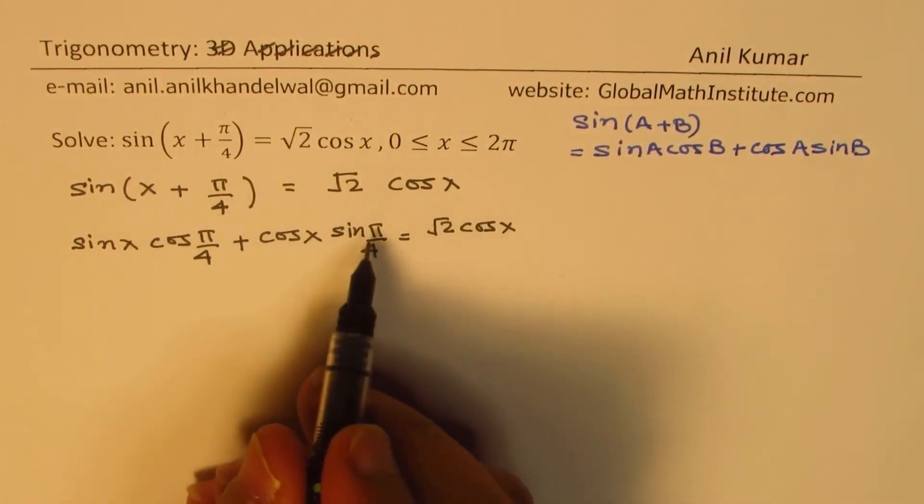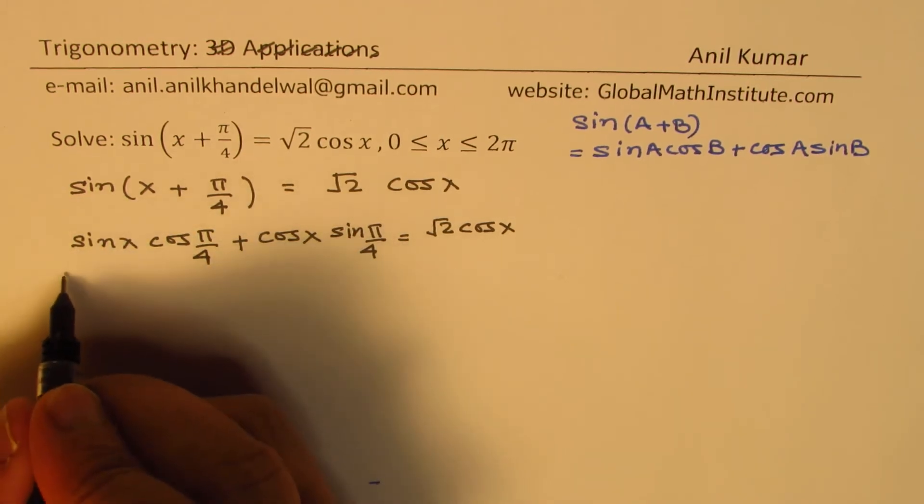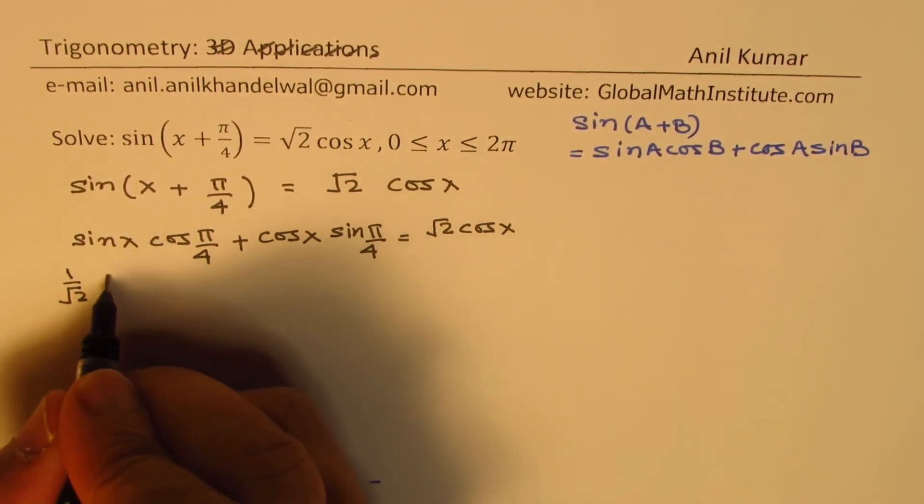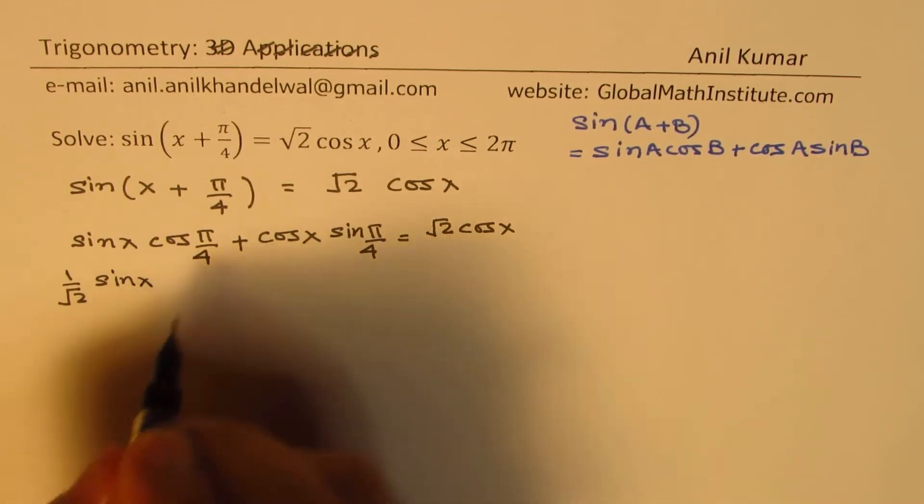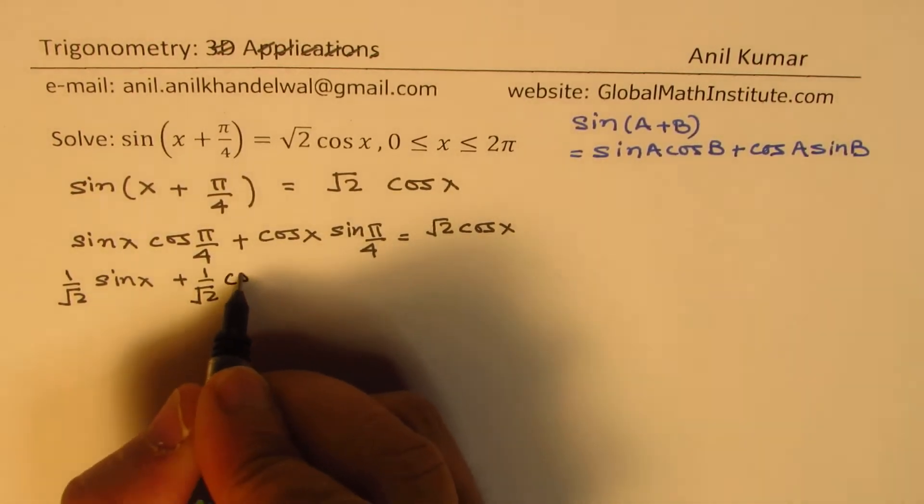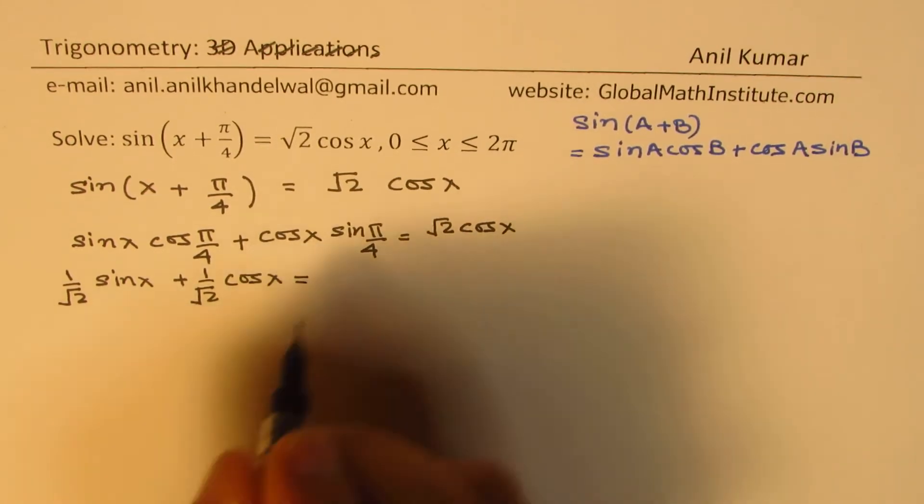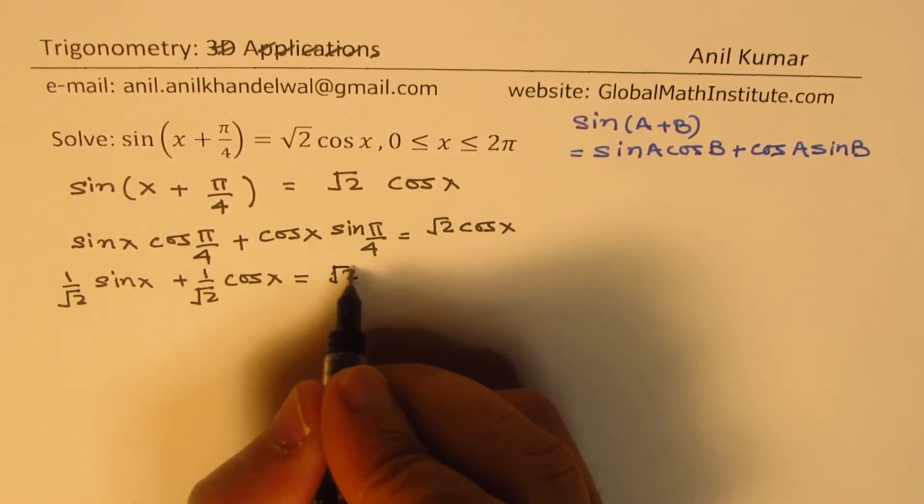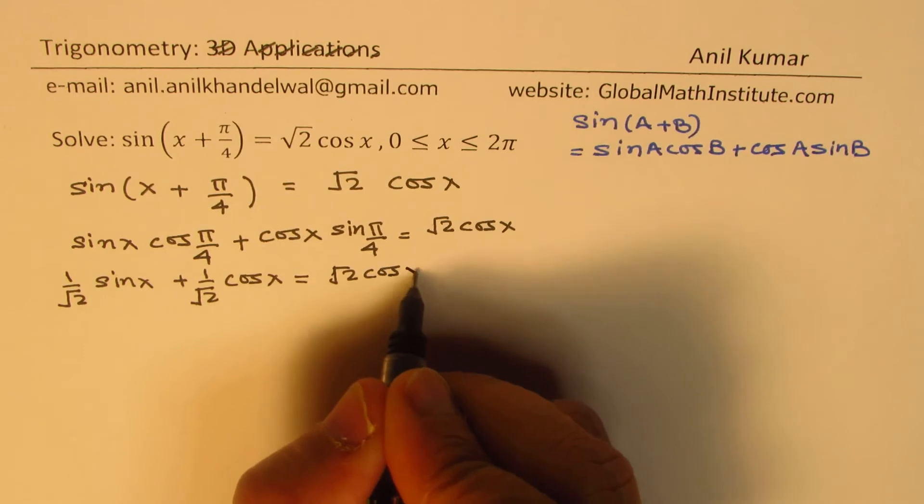Cos(π/4) and sin(π/4) are 1/√2, right? So we can write this as (1/√2) sin x + (1/√2) cos x = √2 cos x.